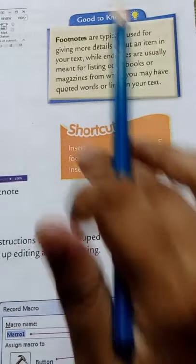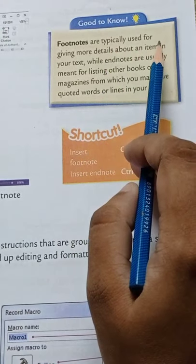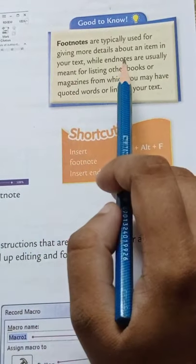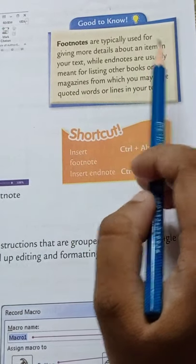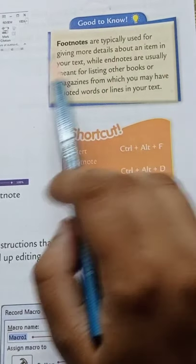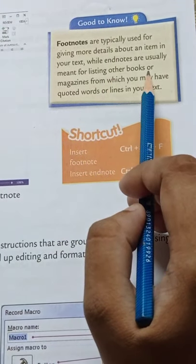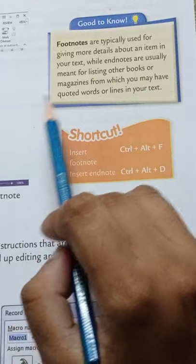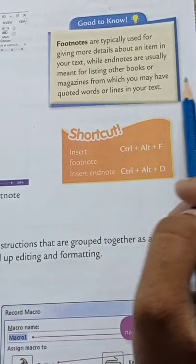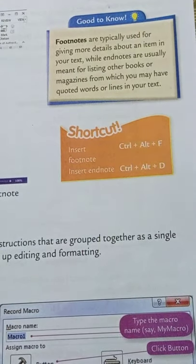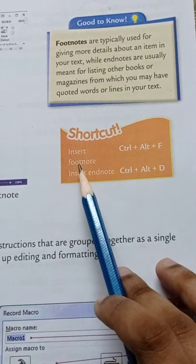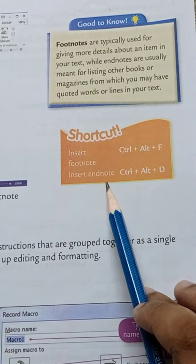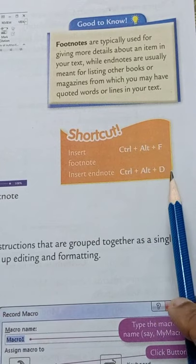Footnotes are typically used for giving more details about an item in your text, while endnotes are usually meant for listing other books or magazines from which you may have quoted a word or line. The shortcut for Insert Footnote is Ctrl+Alt+F, and the shortcut for Insert Endnote is Ctrl+Alt+D.